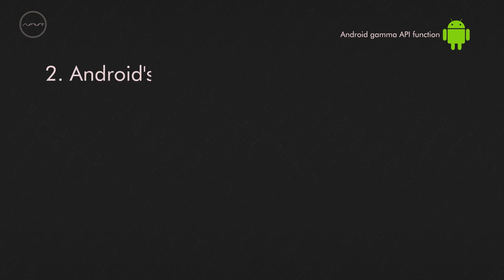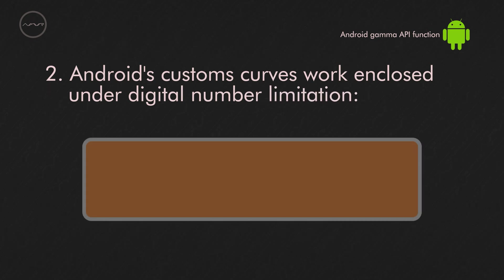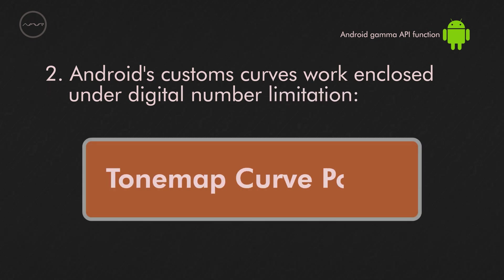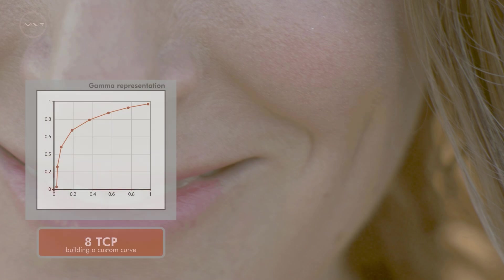Second, custom curves work enclosed under a numeric limitation called tone curve points. This number is set by the brands on Camera2 API. And the higher, the better. It's like bit depth in audio — starting from a ridiculous 8 points or 16.